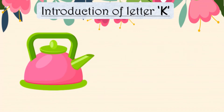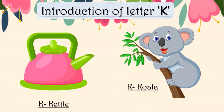K says K — K for Kettle. Your mother uses a kettle. K for Kettle. K says K — K for Koala. K for Koala. So children, these are the few pictures starting with letter K. The phonic sound of letter K is K.